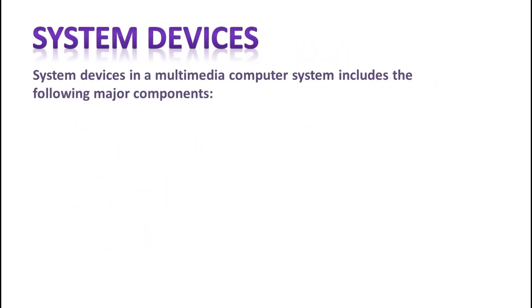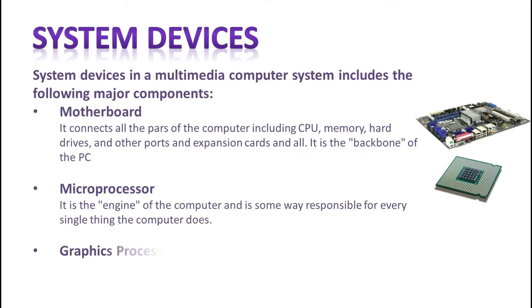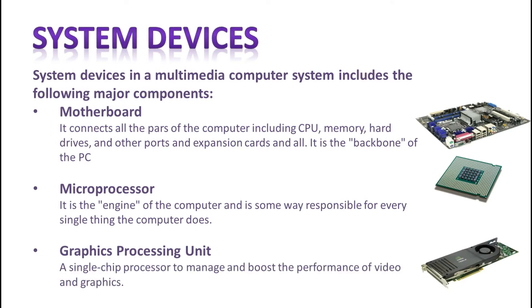System devices are really important components of any computer, which include the motherboard, microprocessor, and graphic processing unit. The motherboard connects all the parts of your computer together. The microprocessor is the engine of the computer that goes into motion when you turn your computer on, and it is responsible for most of the things your computer does. A graphic processing unit is a single-chip processor mainly used to manage and boost the performance of video and graphics.